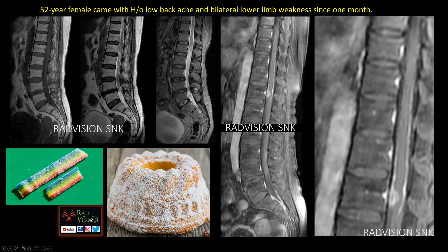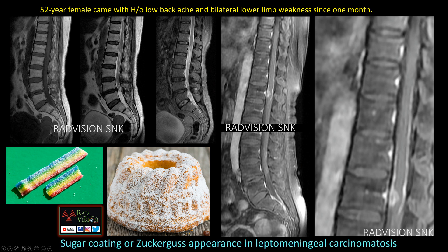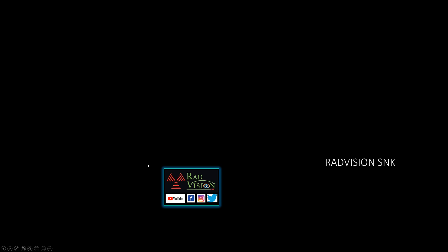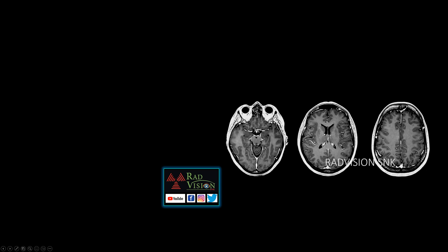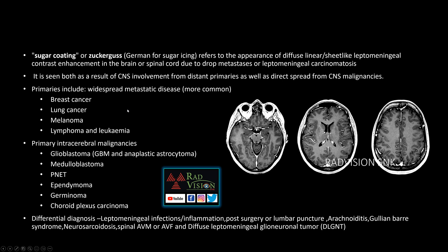Sugar coating is analogous to fine granular sugar over candies or cakes. The brain was screened and showed no primary tumors. This sugar coating or Zuckerguss appearance can be seen in leptomeningeal carcinomatosis from breast carcinoma, lung carcinoma, melanoma, lymphoma, leukemia, and sometimes in drop metastasis. Primaries causing drop metastasis with sugar coating appearance include glioblastoma, medulloblastoma, PNET, ependymoma, germinoma, and choroid plexus carcinoma.